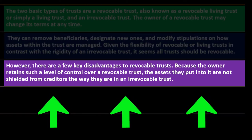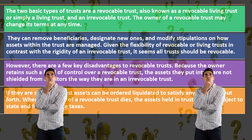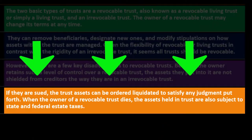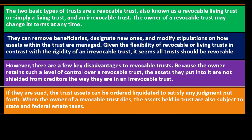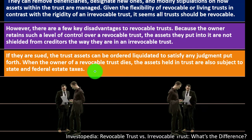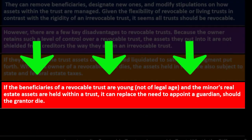There are key disadvantages to revocable trusts. Because the owner retains such a high level of control, assets are not shielded from creditors the way they are in an irrevocable trust — this is similar to the liability protection of a corporate shield. If the owner is sued, trust assets can be ordered liquidated to satisfy a judgment. When the owner of a revocable trust dies, assets held in trust are also subject to state and federal estate taxes.